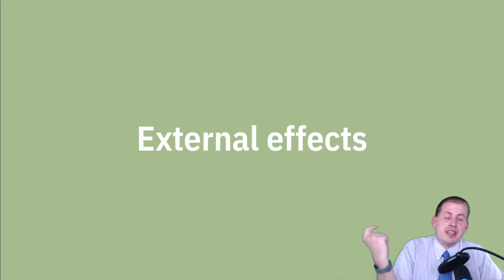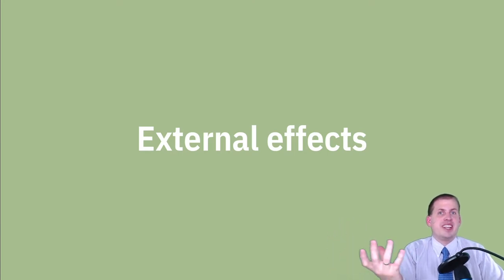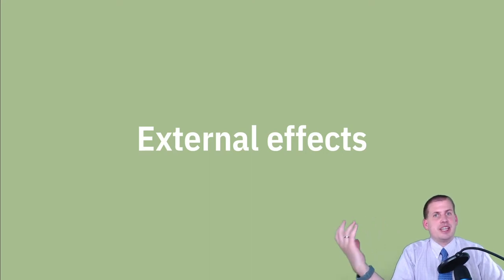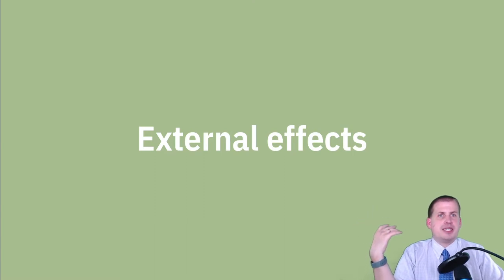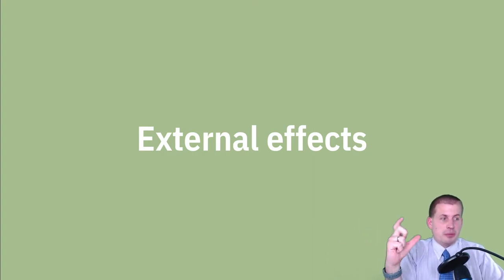At the end of the public goods section, one of the final points about why public goods are a tricky issue is that public goods are a positive externality. An externality has a specific definition in economics. The core ESPP textbook calls it an 'external effect' rather than 'externality' because it's less jargony, but externality is a common term in the economics and policy world — they mean the same thing.